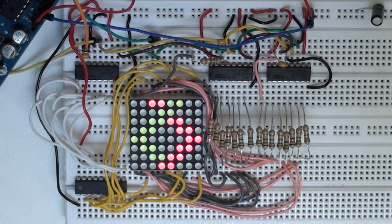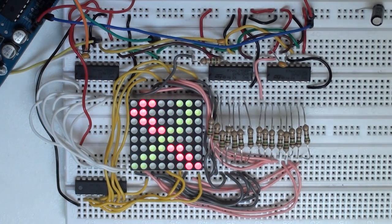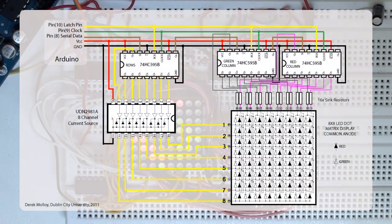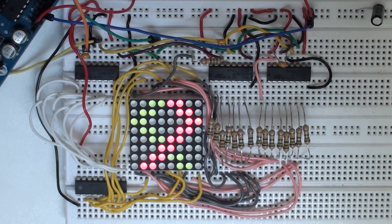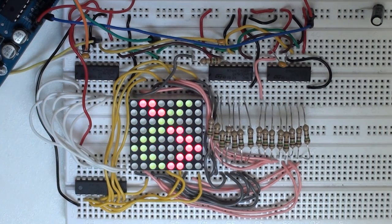One thing worth noting about this circuit configuration is that the UDN2981A on the bottom left hand corner is upside down. You can see here on the circuit diagram that the top right hand corner represents pin 1. The reason for this is that it just allows for a much neater wiring configuration where the white wires are the inputs and the yellow wires are the outputs to the individual rows of the 8x8 display.